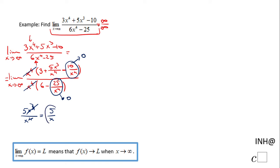When x is getting larger and larger this one is getting closer to 0. So this is also getting closer to 0 so what we have left here is going to be 3 plus 0 minus 0 over 6 minus 0.